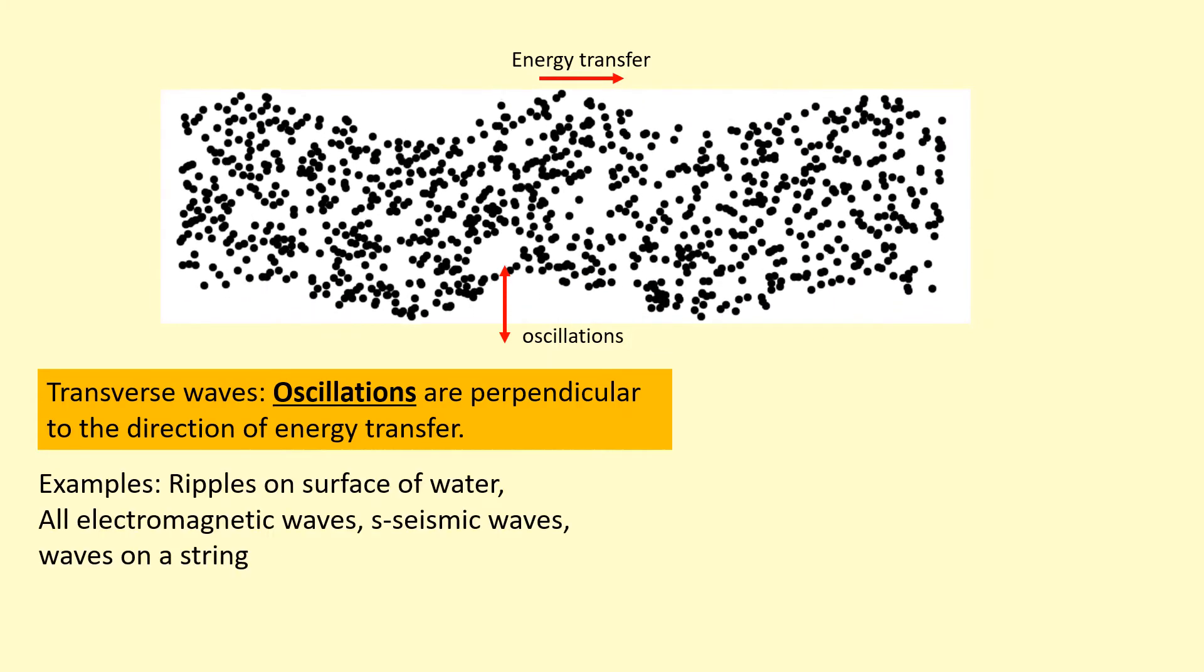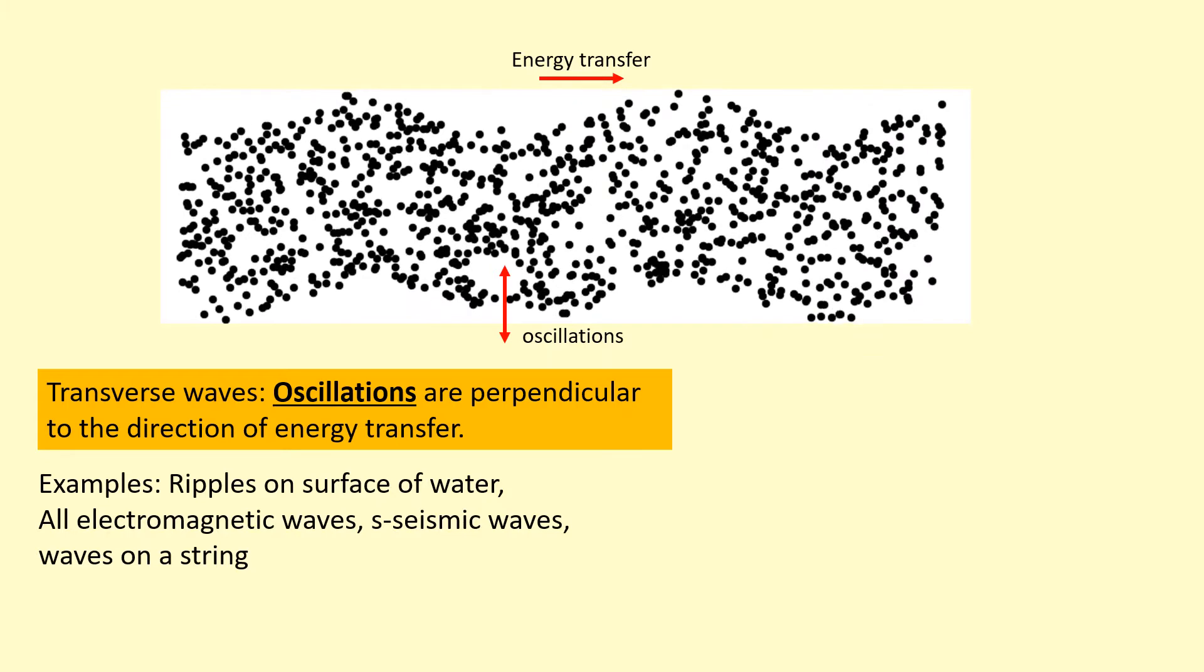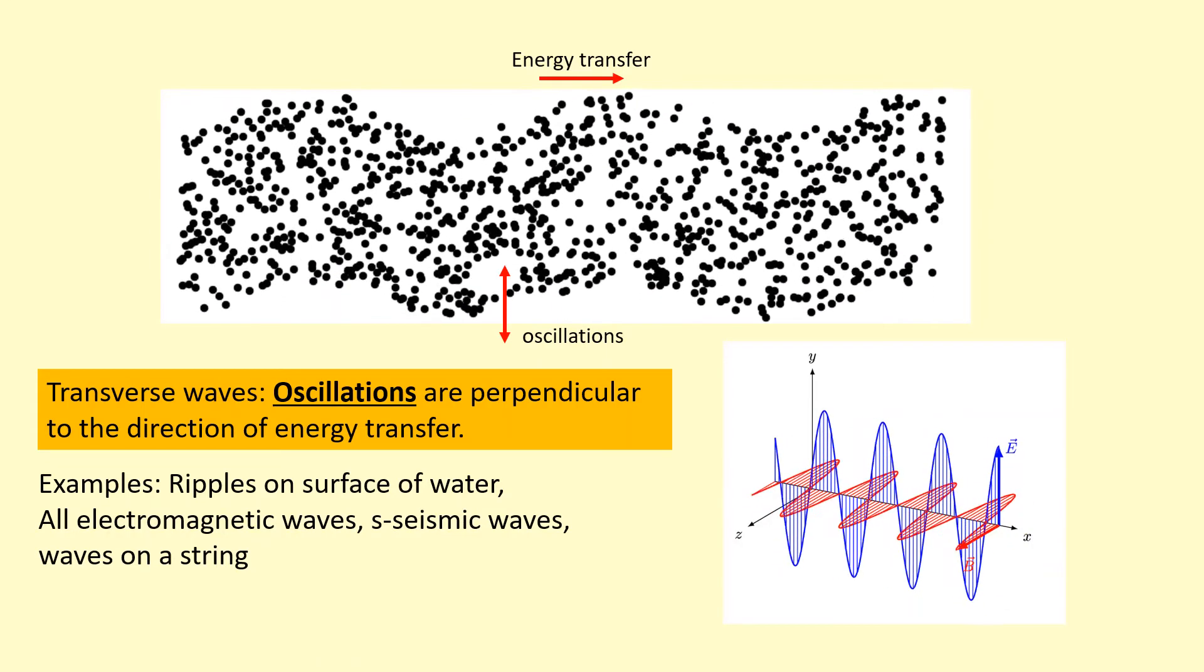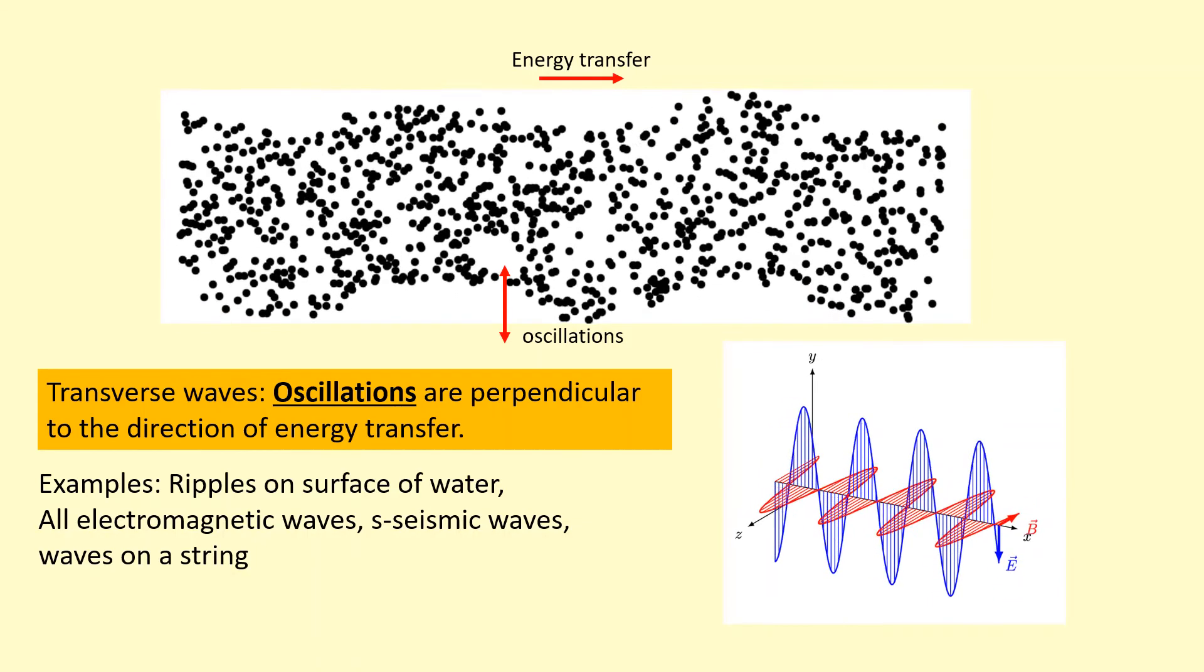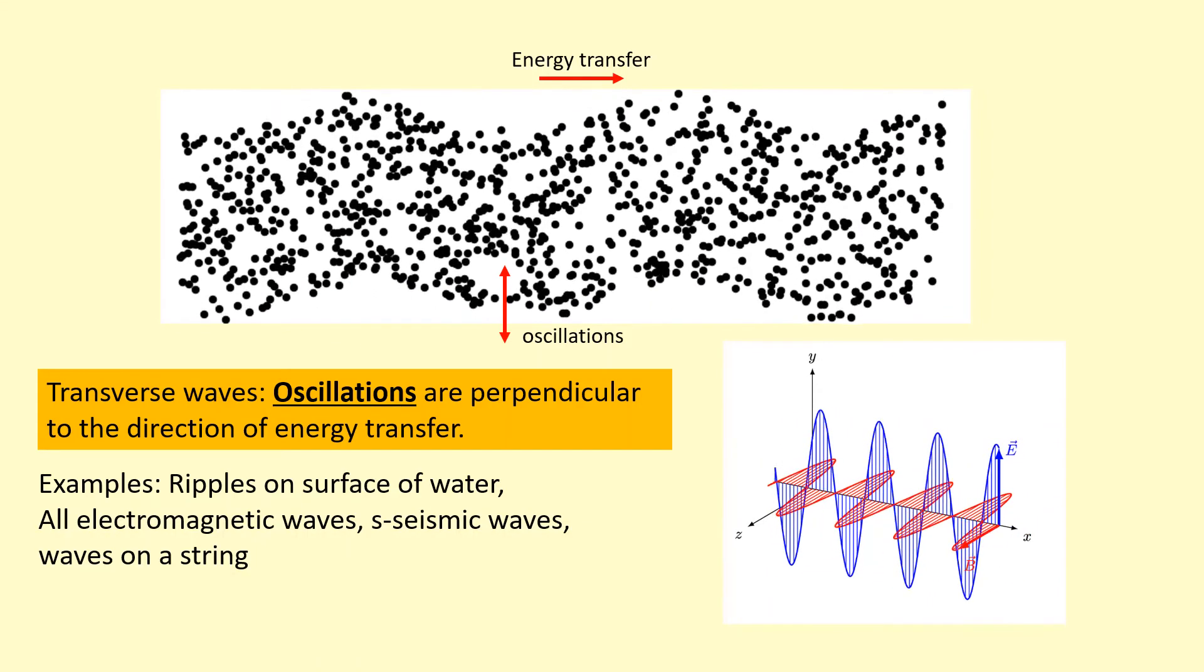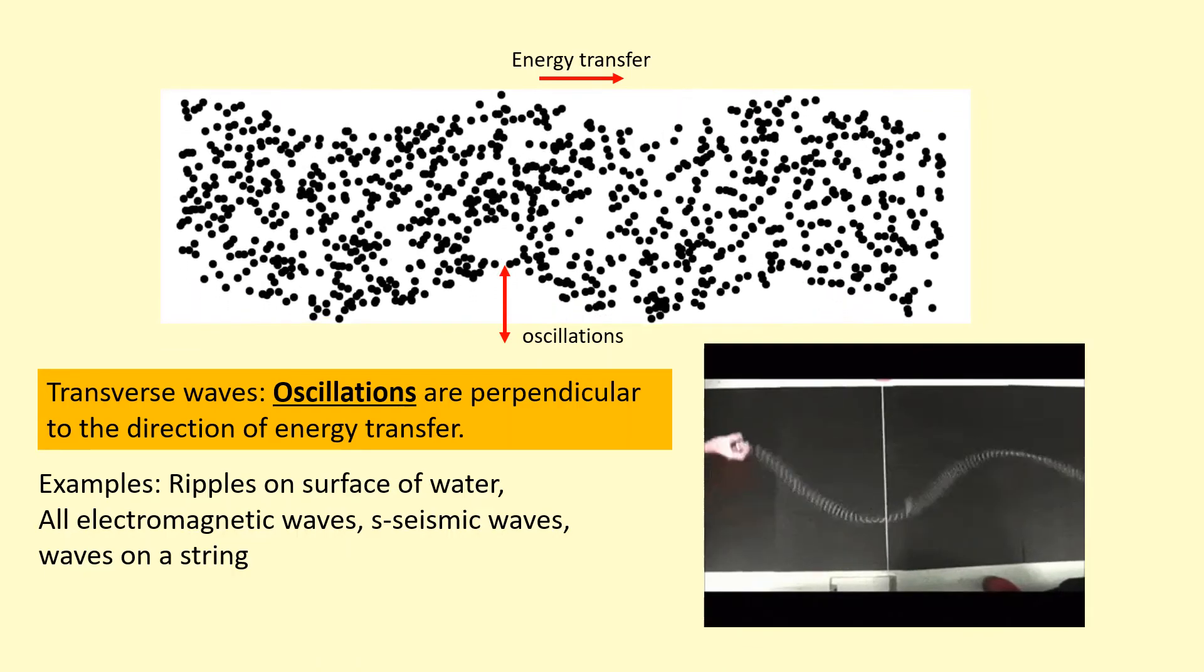Examples include ripples on a surface of water and electromagnetic waves. So electromagnetic waves aren't made out of particles. Instead in those, the electric field and the magnetic field are oscillating perpendicular to the direction of energy transfer. Other examples include S seismic waves and waves on a string like this.